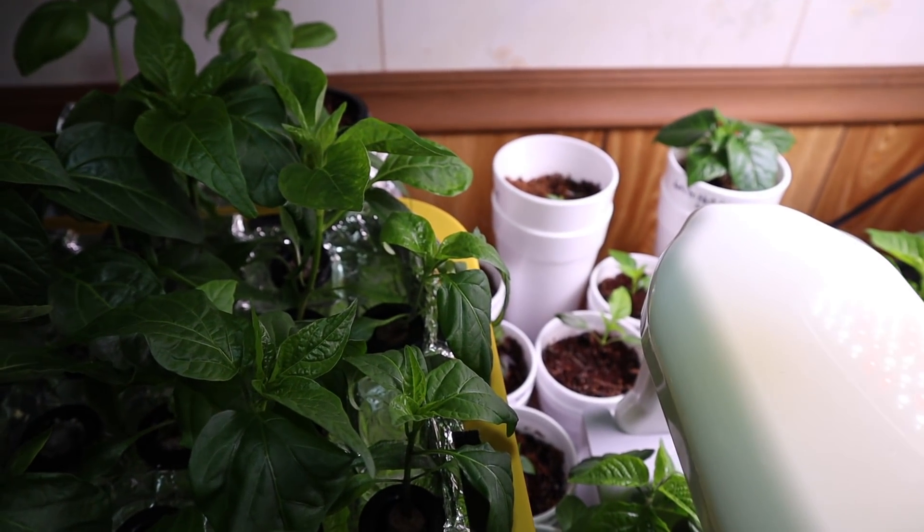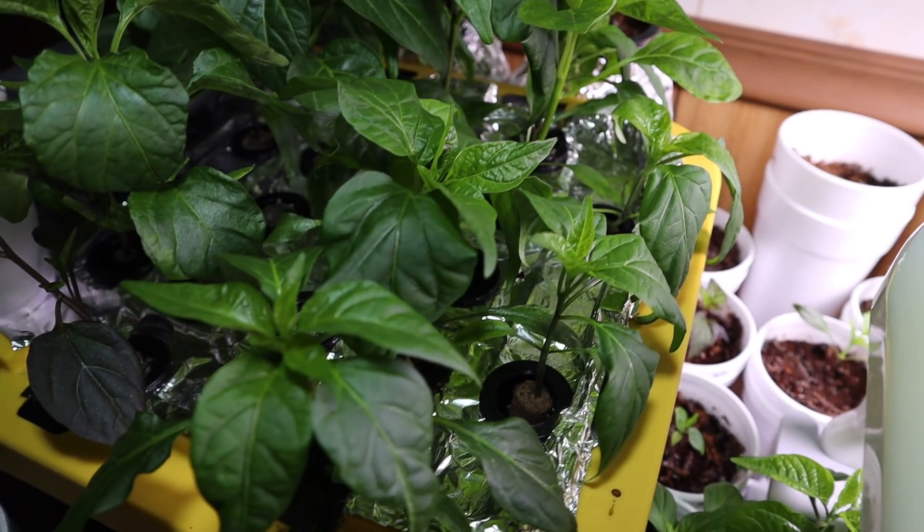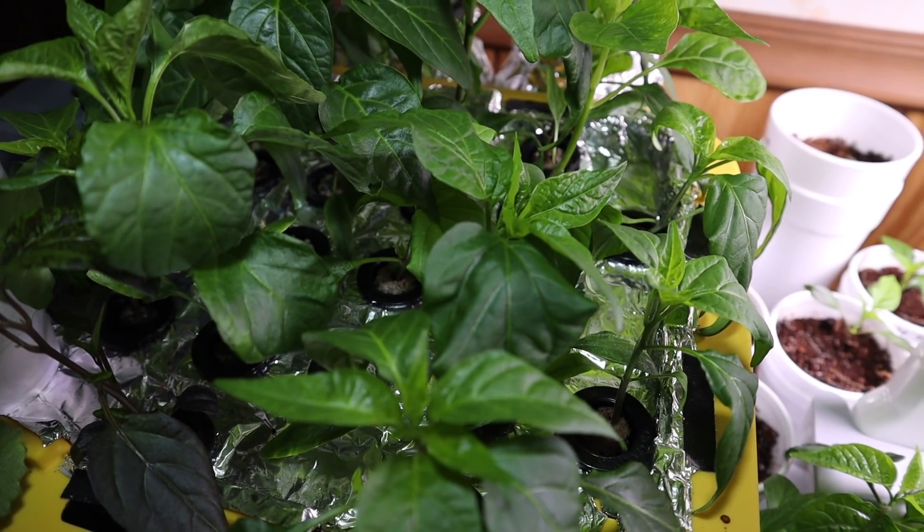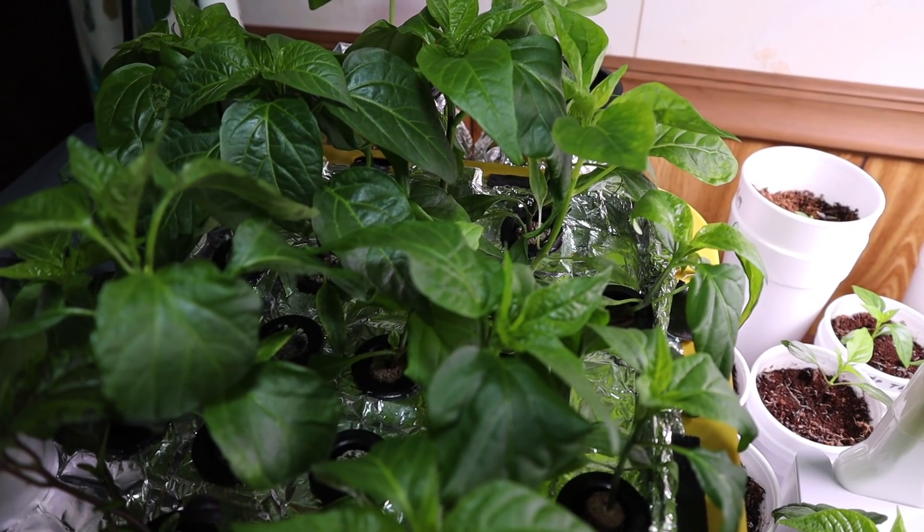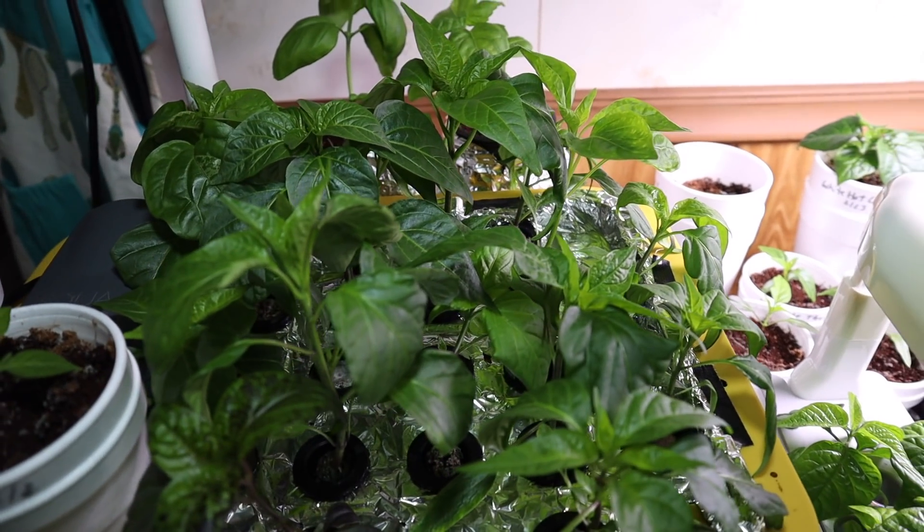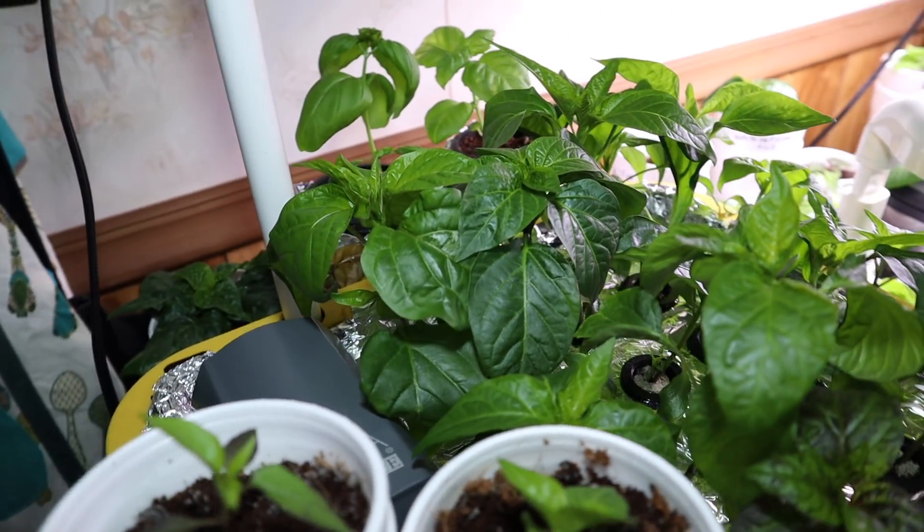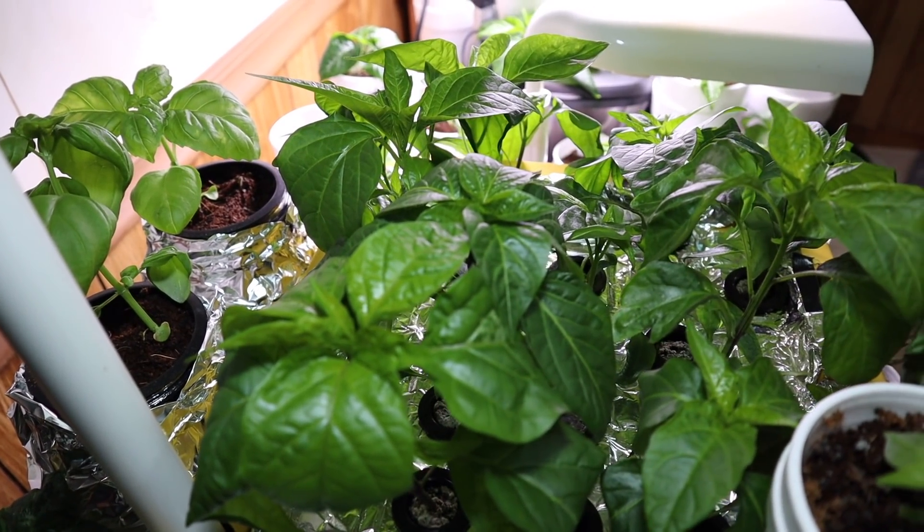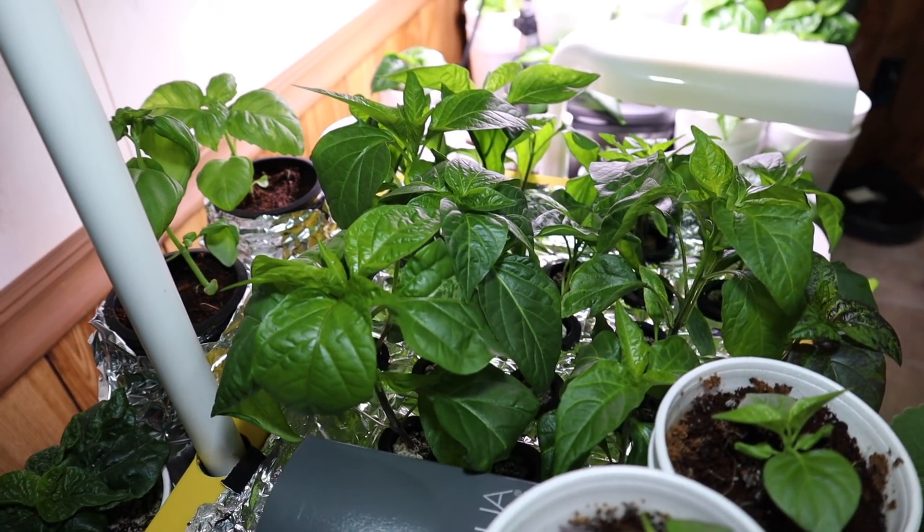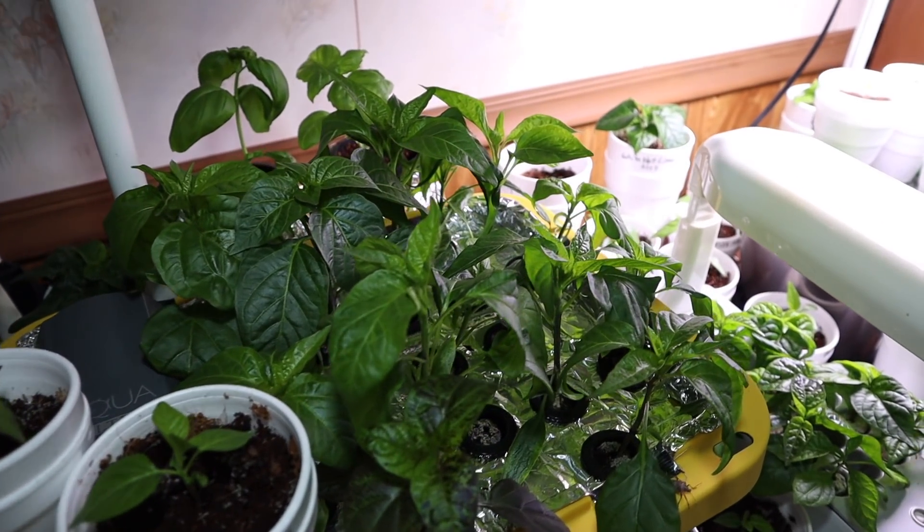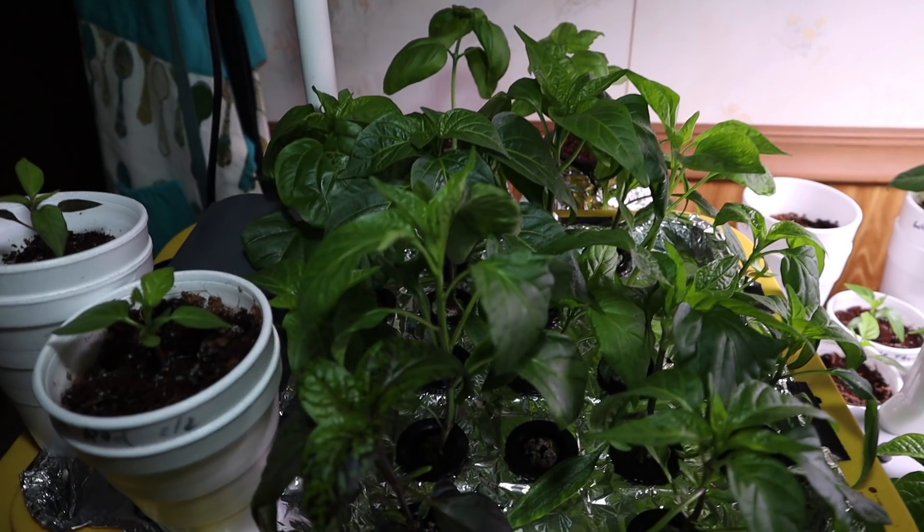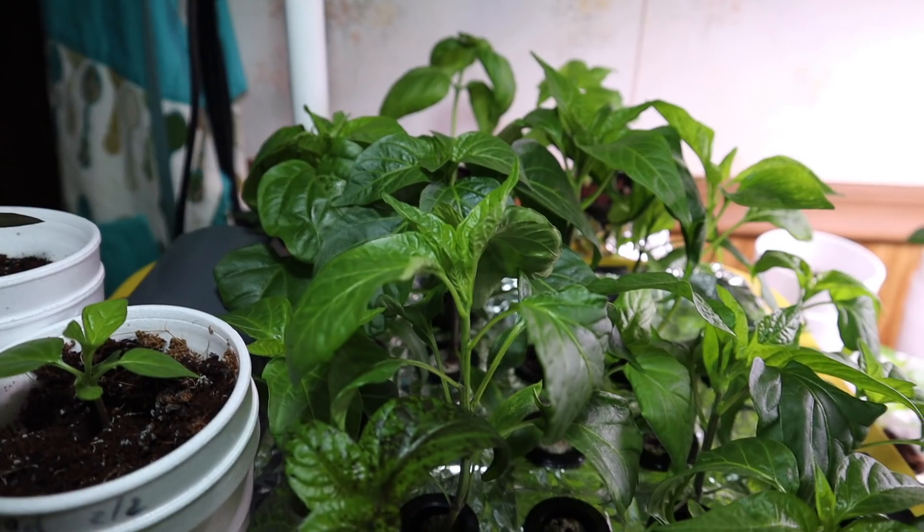One thing I may do differently the next time is cut the bottoms out of these one inch net pots just to make it easier to pull them out. I got the tip from BD Beats. He uses a system similar to this, and this is something he learned. Yeah I think it's a very good system. And it doesn't look as pretty as an AeroGarden, but it does work very well and it costs a lot less to make. So anyway, hope you liked that, found it useful. Thank you very much for watching. Please like, comment, and subscribe.